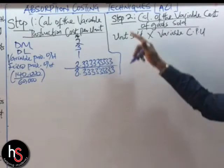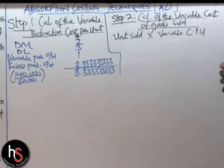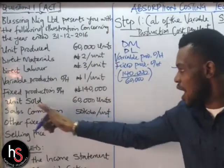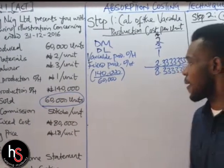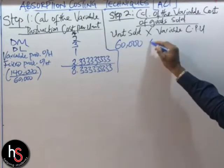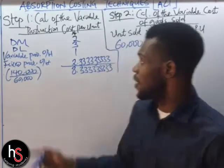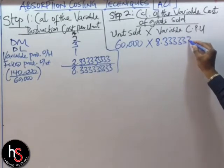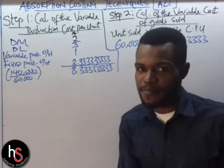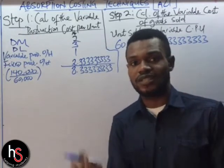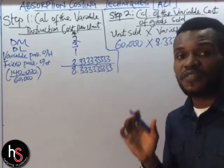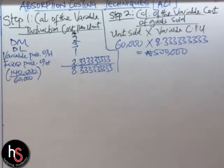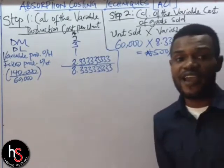Now we move to the next step: the calculation of the cost of goods sold. The formula is units sold times the variable cost per unit. What is the units sold in the question? We have 60,000 units sold. So our calculation is 60,000 times 8.333... — please do not approximate this value in any question under Absorption Costing Techniques. When we multiply, it gives us 500,000 Naira.